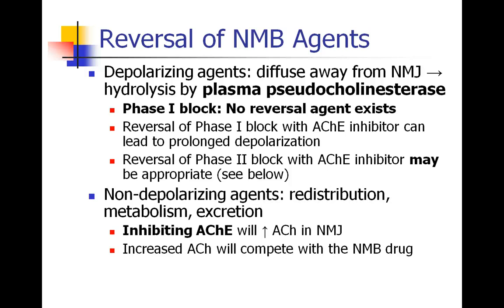Non-depolarizing drugs will eventually reverse themselves, but they have to diffuse away from the acetylcholine receptor, redistribute throughout the body, and be metabolized and excreted — which can take a long time. If we inhibit acetylcholinesterase, we increase the amount of acetylcholine in the neuromuscular junction, and we'll eventually increase it so much that it will compete with the neuromuscular blocking drug, because it's a competitive antagonist, and we can regain the patient's neuromuscular strength.